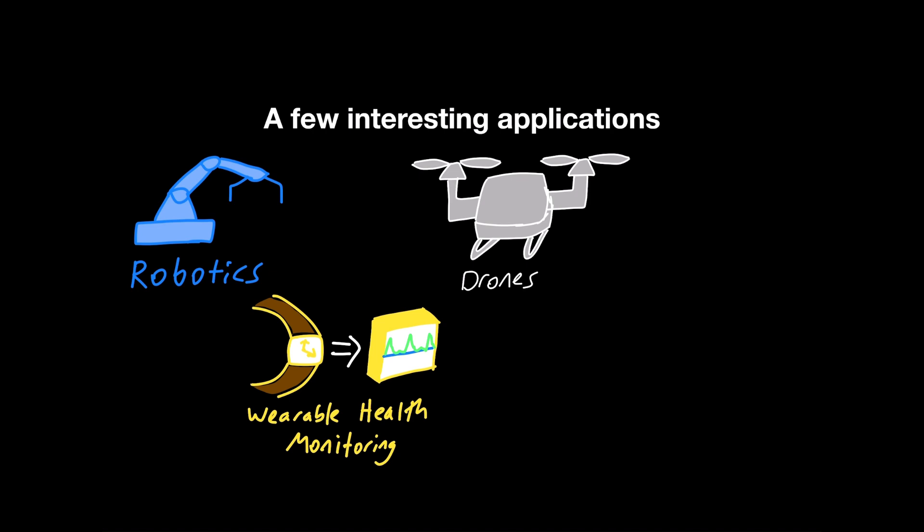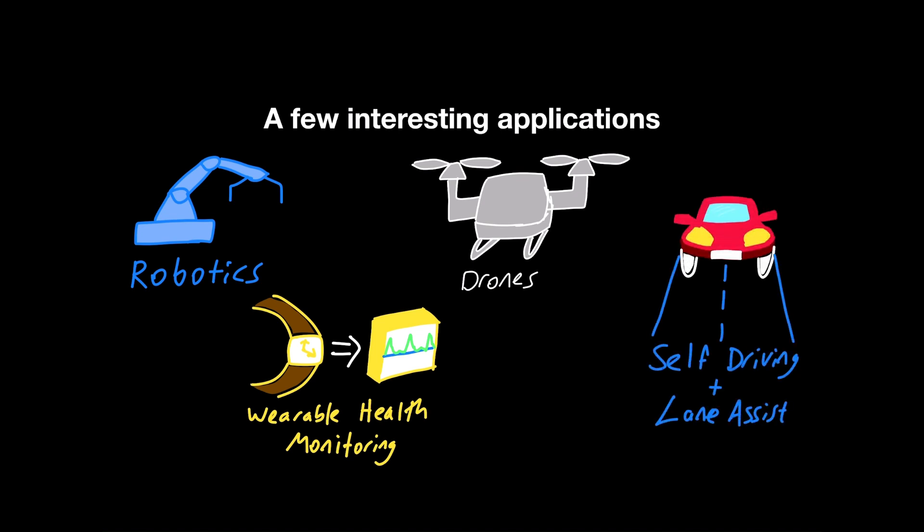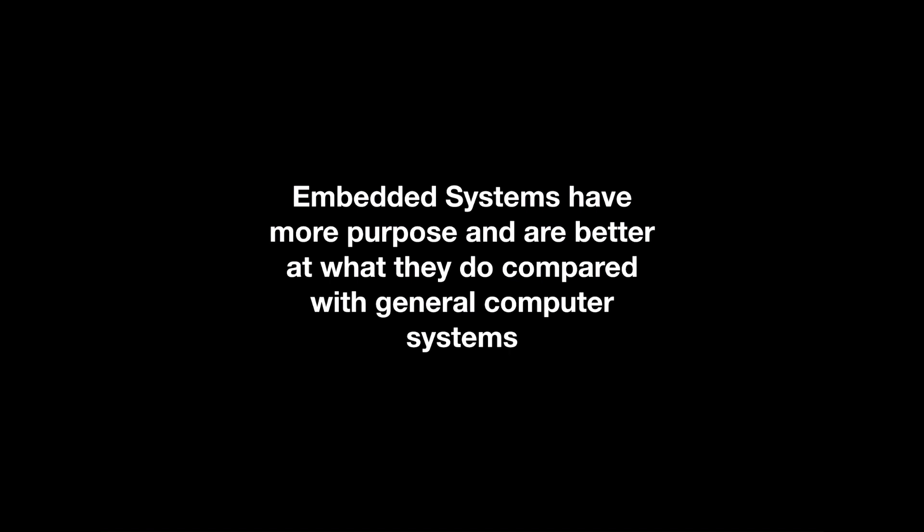The final example is self-driving cars and lane assist technology. This is a very complex system and must be optimized to each car design and steering sensitivity. From this, you should be able to see that embedded systems have more of a purpose and are better at what they do, especially compared to a general-purpose computer.